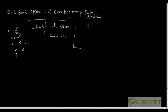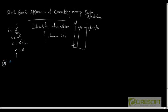We maintain a global hash table for these identifier descriptors, where the key is the identifier and the value is the identifier descriptor pointer. While performing lexical analysis, we populate this hash table.